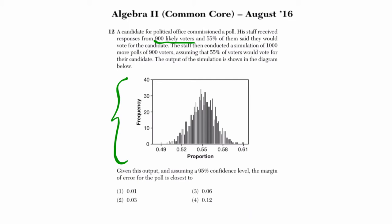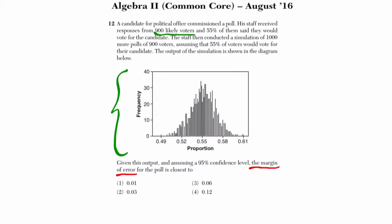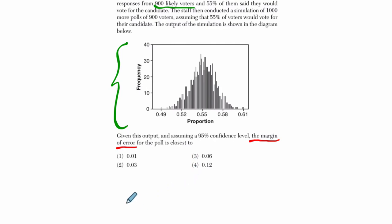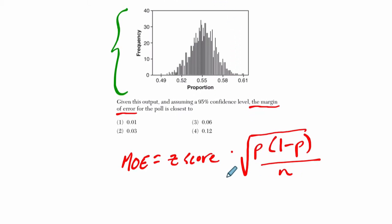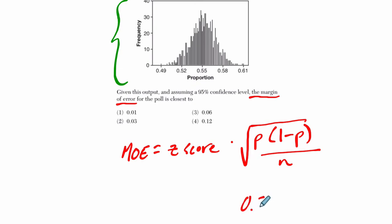Notice that they'll ask you for the margin of error. The formula you need to know is: margin of error equals your z-score times the square root of p times 1 minus p over n. What p is, that represents the mean of your sample proportion. So that's the 55% here, and it's going to be as a decimal, so we'll write 0.55.